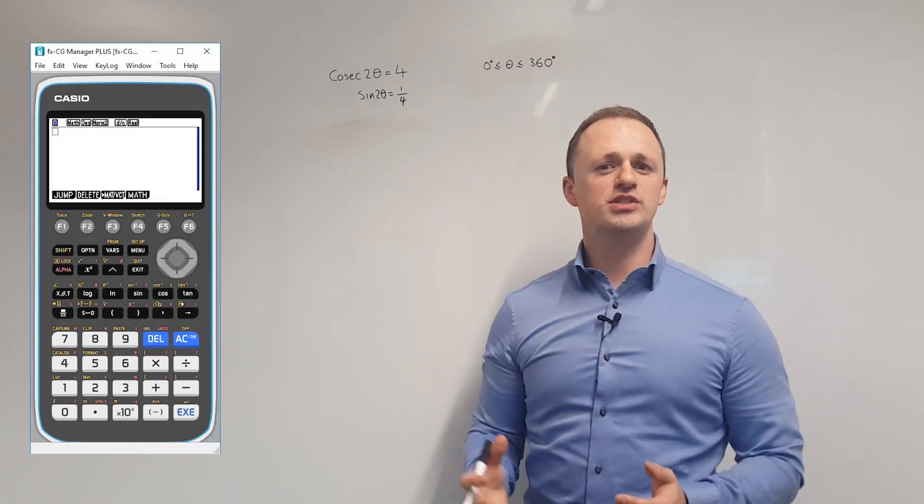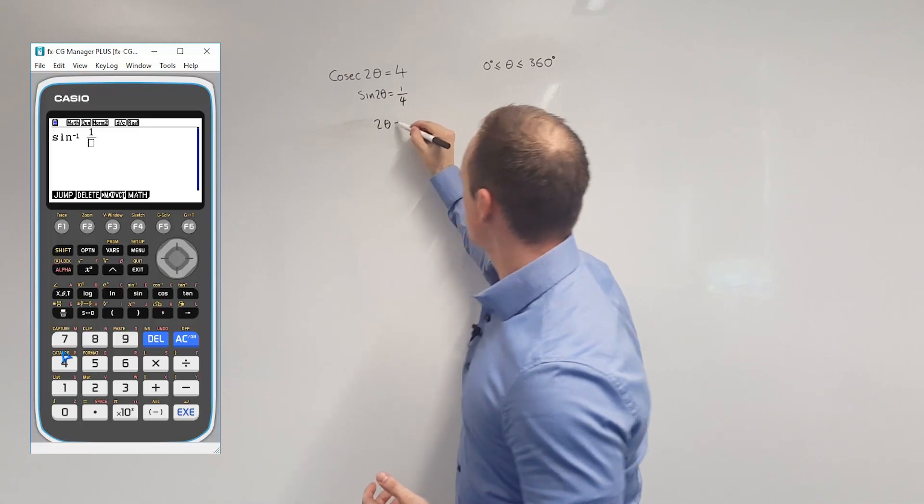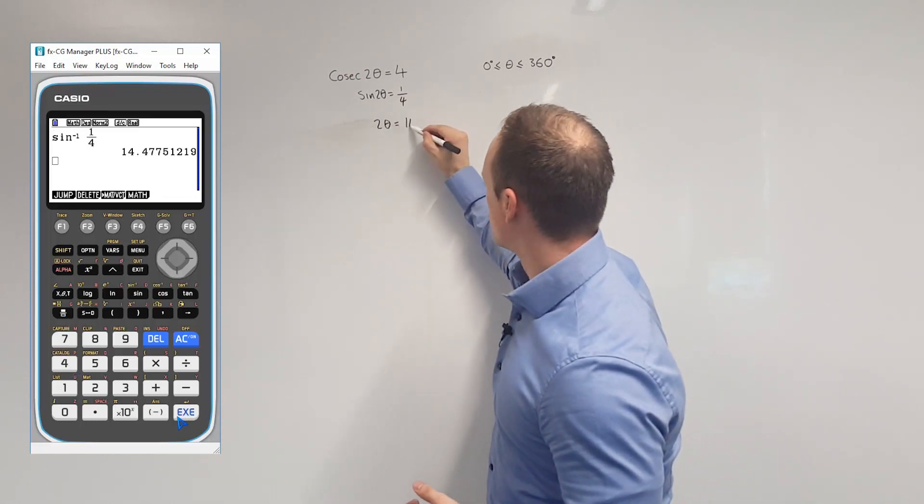Next, we're going to get the principal solutions for 2θ by doing inverse sine of 1 quarter. And if we do that, we get 2θ equals 14.4.